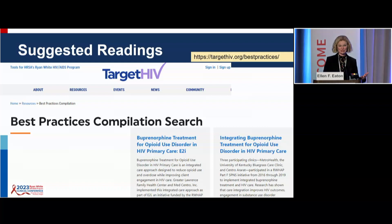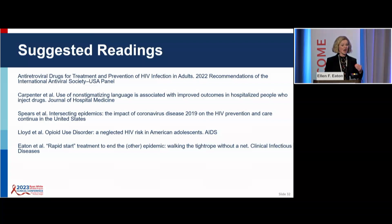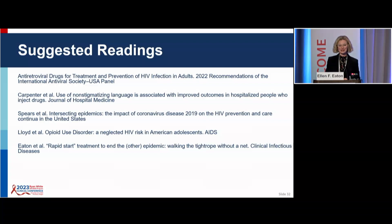I'm leaving you with a lot of additional resources. I want you all to reach out to me if you have questions or need peer mentoring on how to start buprenorphine. There is a HRSA resource at TargetHIV.org best practices, and four additional readings on integrating addiction treatment into your practice: the IAS USA HIV treatment guidelines, a paper on stigmatizing language and more inclusive language, a paper on adolescents and young adults as an undertreated group disproportionately affected by opioids, and a paper on rapid start for opioid use disorder treatment — just as we do rapid start for ART, we need to do rapid start for OUD because it is acutely fatal.